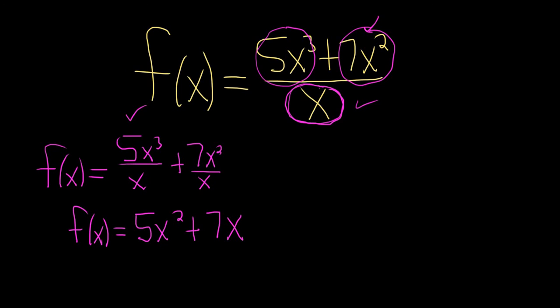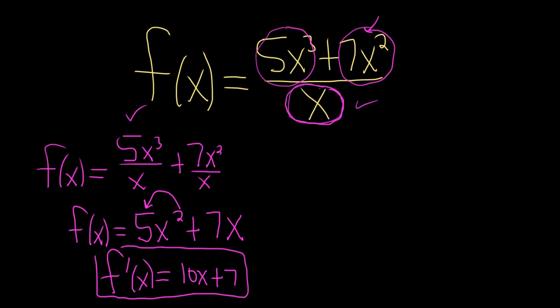And now we can take the derivative. So f prime of x is equal to — using the power rule, 2 times 5 is 10, and we subtract 1, so 2 minus 1 is 1, giving us 10x — plus the derivative of 7x is just 7. And that is the derivative.